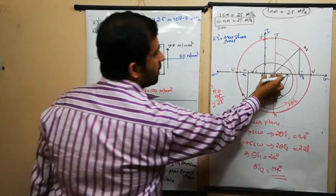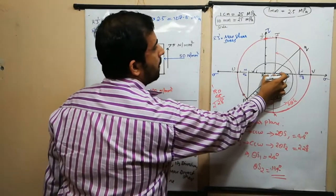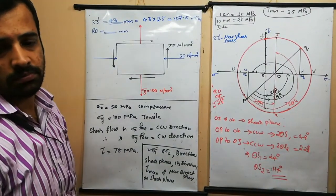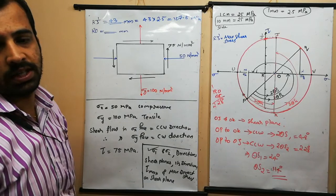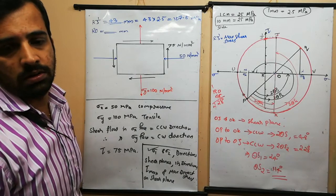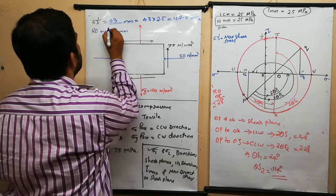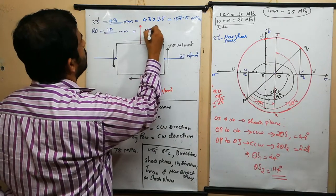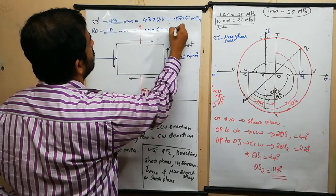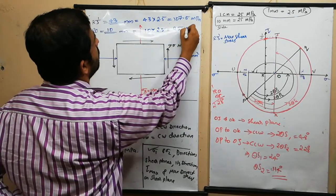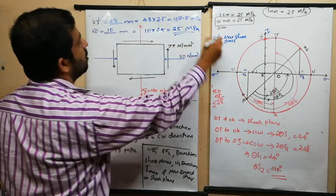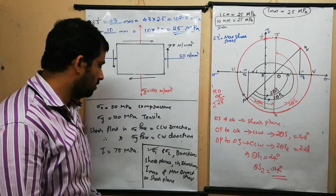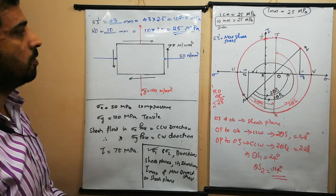Now Ro — the distance from R to O — gives the magnitude of maximum direct stress on the shear plane. Measuring that distance gives 10 mm, and 10 multiplied by 2.5 equals 25 mega Pascal. So this is the maximum value of direct stress on the shear plane. This is how we solve this problem.